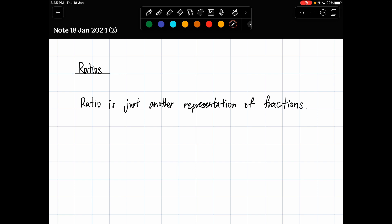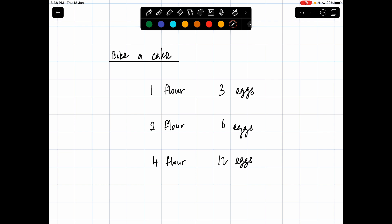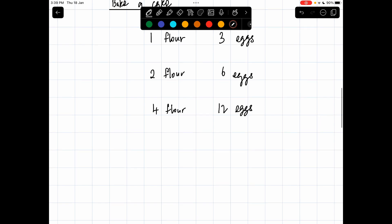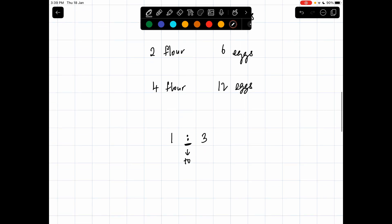For example, comparing 4 hours to 12 eggs, we can represent this relationship in a ratio form. By the way, this double dot is called 'to' when you are reciting the ratio. And that's how ratios work - you are actually comparing two quantities.